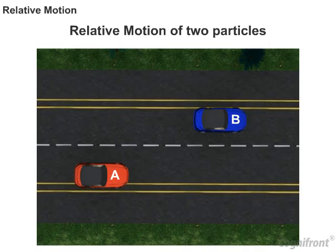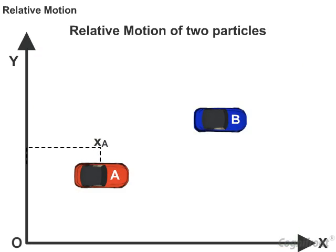Now, let's say automobile A has XA as its position coordinates and B has XB as its position coordinates measured from the origin.